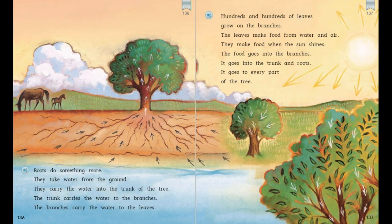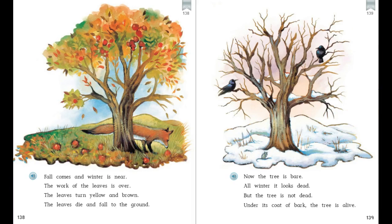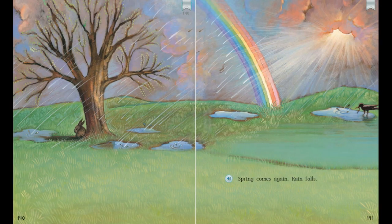How do the arrows on pages 136 and 137 help make the information clearer? On page 139, how do the words in the sentences and the picture help you know what 'bear' means? What causes the leaves to die? How has the tree changed from fall to winter?